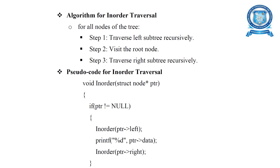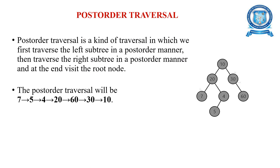The algorithm for in-order traversal is: traverse the left sub-tree recursively, visit the root node, then traverse the right sub-tree recursively. The pseudo code checks if the pointer is null, then accesses pointer to left, pointer data, then pointer to right. This is the in-order tree traversal.